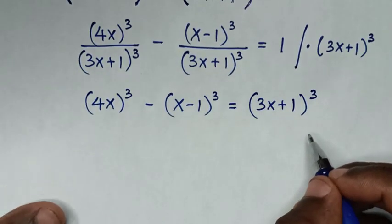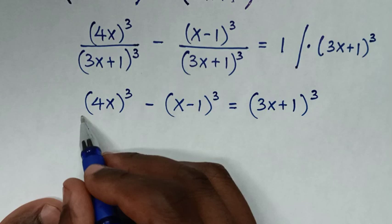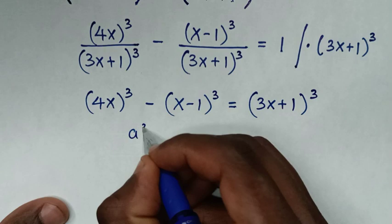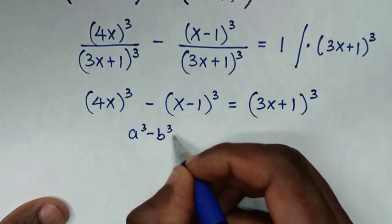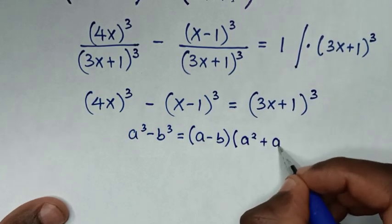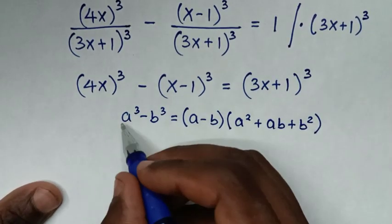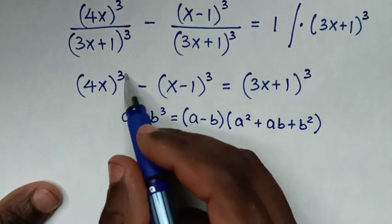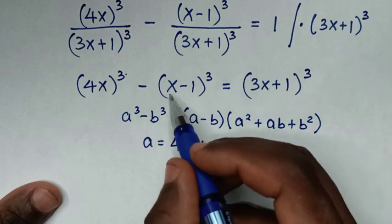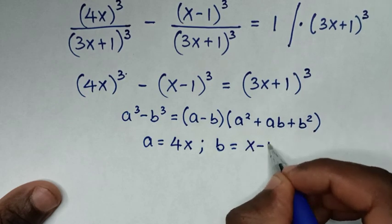In the next step, (4x)³ minus (x-1)³ is in the form of a difference of perfect cubes. So we'll apply the rule: a³ minus b³ equals (a minus b)(a² plus ab plus b²). Comparing, a³ with (4x)³ gives a = 4x, and comparing b³ with (x-1)³ gives b = x-1.